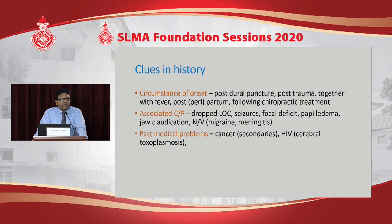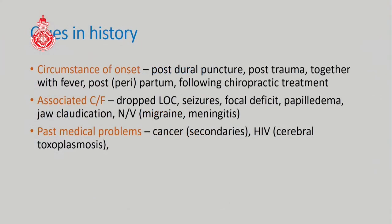Key history clues include the circumstances at headache onset. Headache after lumbar puncture suggests post-dural puncture; post-trauma with fever suggests infection; postpartum or peripartum suggests venous sinus thrombosis; following chiropractic treatment or neck jerks suggests carotid dissection. Associated features such as drop in consciousness level, seizures, or focal deficits point toward a particular diagnosis. Past medical history of cancer or HIV also provides important diagnostic clues.